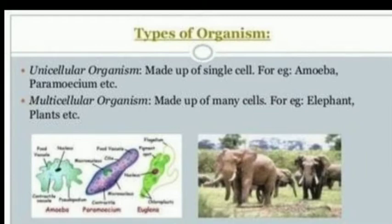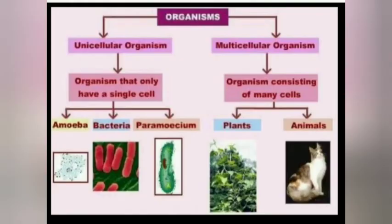For unicellular organisms, amoeba and paramecium are examples. For multicellular organisms, elephants, plants, and humans are examples. As you can see in the image, amoeba, bacteria, and paramecium are unicellular, whereas plants, animals, and humans are multicellular organisms.